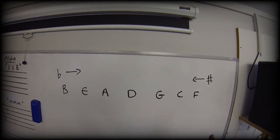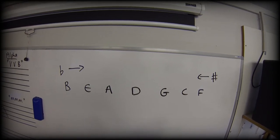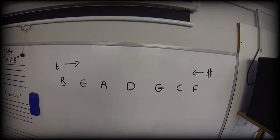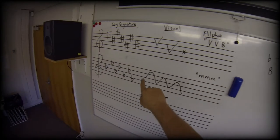Let's now take this and figure out how to write a correct key signature on the manuscript lines. We'll start with the flats: bead, G, C, F. Here we go.